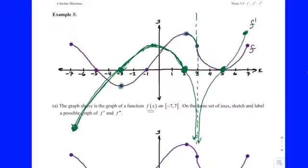Let's see how y'all did here. So, why did the green one have a vertical asymptote at 3? Because at 3, the function had a vertical tangent line, and the slope of a vertical line does not exist.